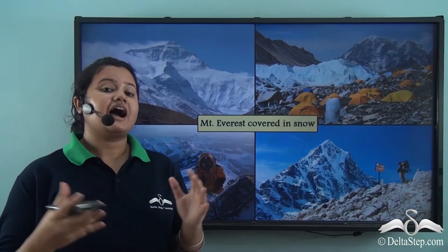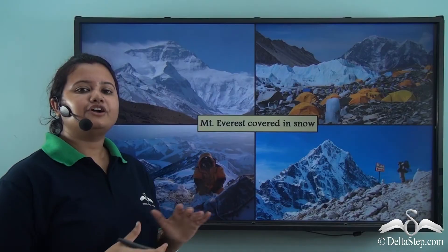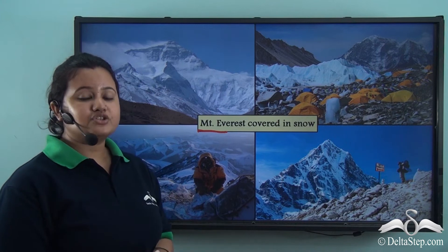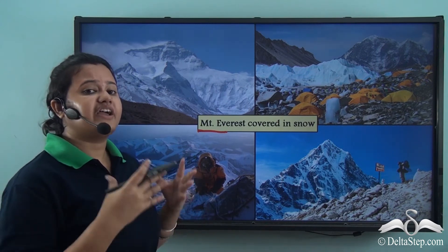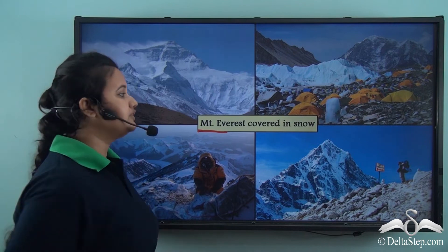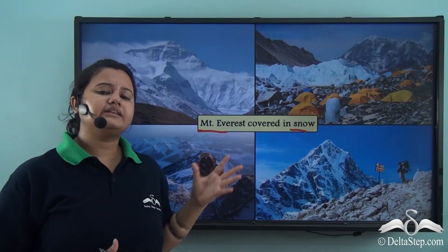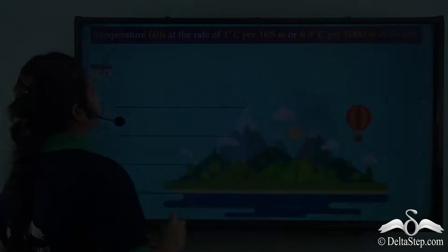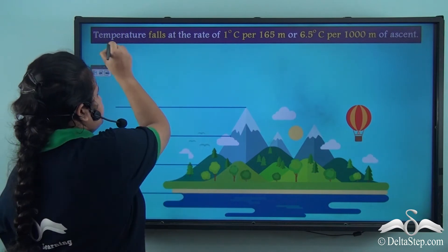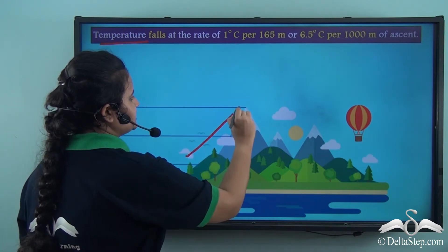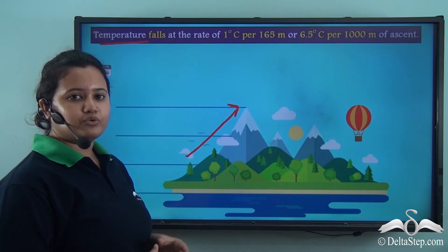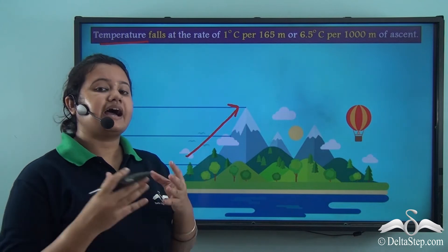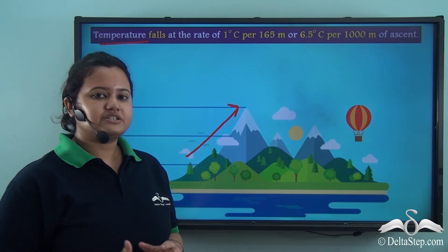High mountain peaks like Mount Everest are very cold and covered with snow and ice. The reason is that temperature decreases with increase in altitude — the higher we move, the cooler it becomes. This temperature decrease occurs at a specific rate known as the normal lapse rate.